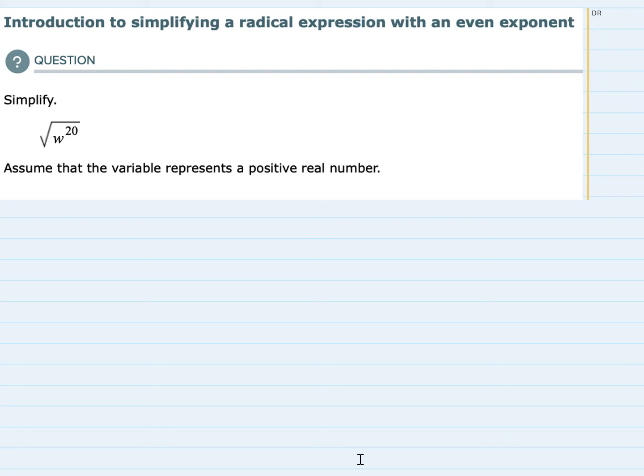So we have our radical and we have a variable inside being raised to an even exponent. I think it's helpful if we remember that a square root, even though we don't write it, this is a square root, so we're asking what number times itself would be w to the 20th power. But I think it's helpful to think of these radicals as fractional exponents.